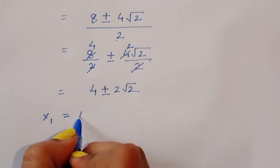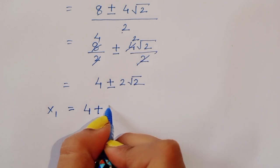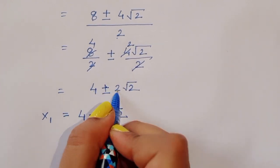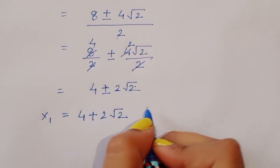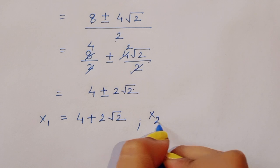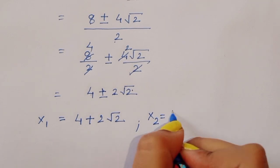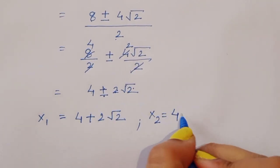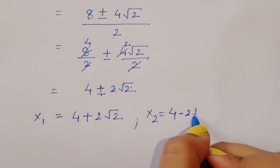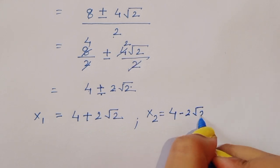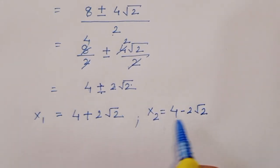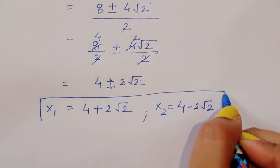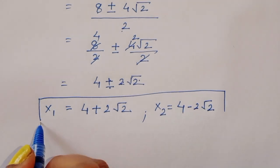So we get x1 is equal to 4 plus 2 root 2, and x2 is equal to 4 minus 2 root 2. Now we have to find out the values of y1 and y2.